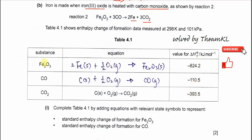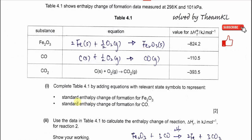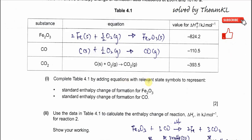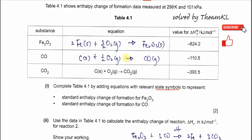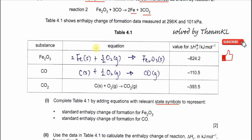For the first equation — iron(III) oxide — we need to ensure one mole of iron(III) oxide is produced. It must be solid, and it must be formed from its elements: iron and oxygen. You balance the equation, making sure one mole of iron(III) oxide is always on the product side. The state symbol for iron is solid and for oxygen is gas.